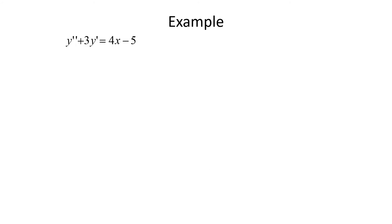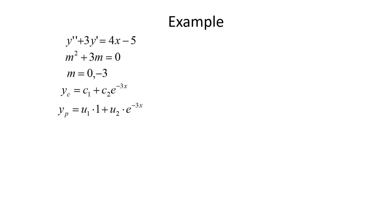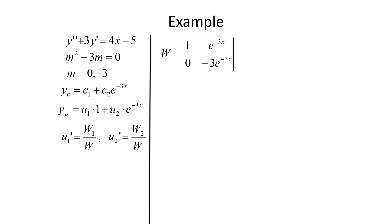Let's look at one final example: y'' + 3y' = 4x - 5. We start by finding the complementary function. The auxiliary equation is m² + 3m = 0, so m(m + 3) = 0, giving m = 0 or m = -3. So yc = c1 + c2·e^(-3x). To find yp using Variation of Parameters, we assume yp = u1·(1) + u2·e^(-3x), taking the same form as yc, then work to find u1 and u2 using Cramer's rule.